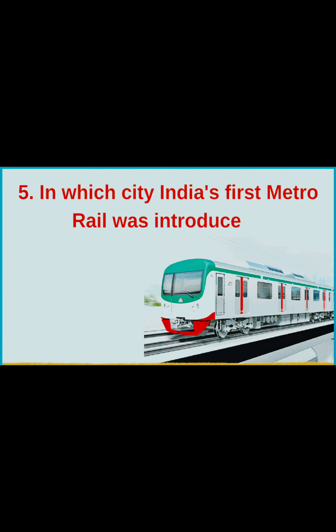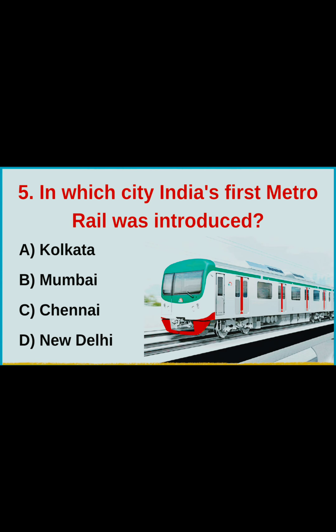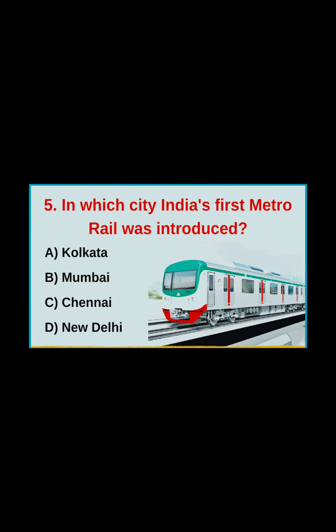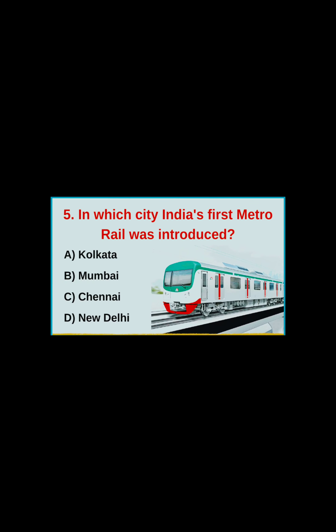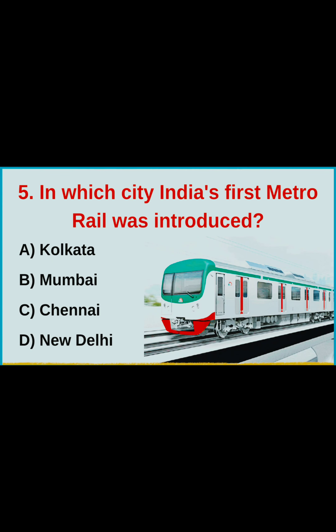Question number 5: In which city was India's first metro rail introduced? Your options are: A. Kolkata, B. Mumbai, C. Chennai, D. New Delhi. The correct answer is option A, Kolkata.